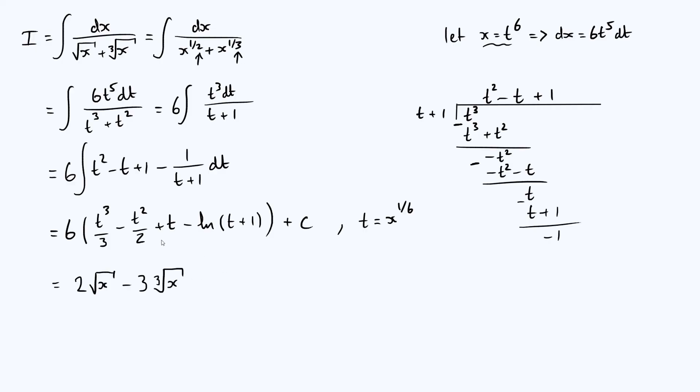We are nearly there. So this next term is t, which is just x to the 1 6th. Remember, x to the 1 6th is the same as the 6th root of x. And so we can write that as 6 times the 6th root of x.